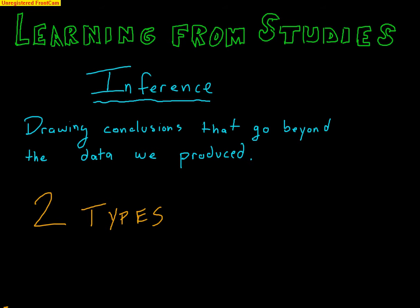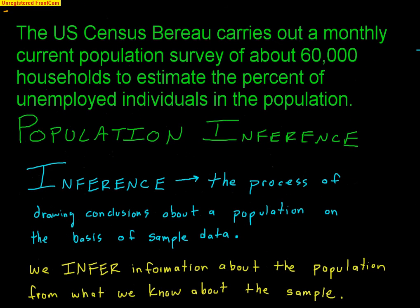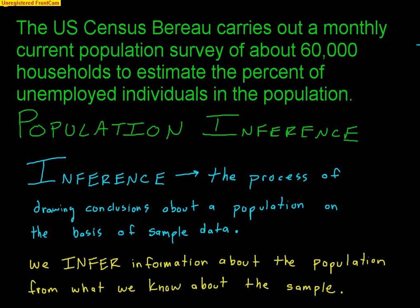There are two types of inference we need to be concerned with in this class. The first type: the U.S. Census Bureau carries out a monthly current population survey of about 60,000 households to estimate the percent of unemployed individuals in the population. This is known as population inference. They collect a random sample of 60,000 households, and whatever they learned from that sample can be applied to the population. If they find that 5% of that sample is currently unemployed, they could say roughly 5% of the entire U.S. population is unemployed.